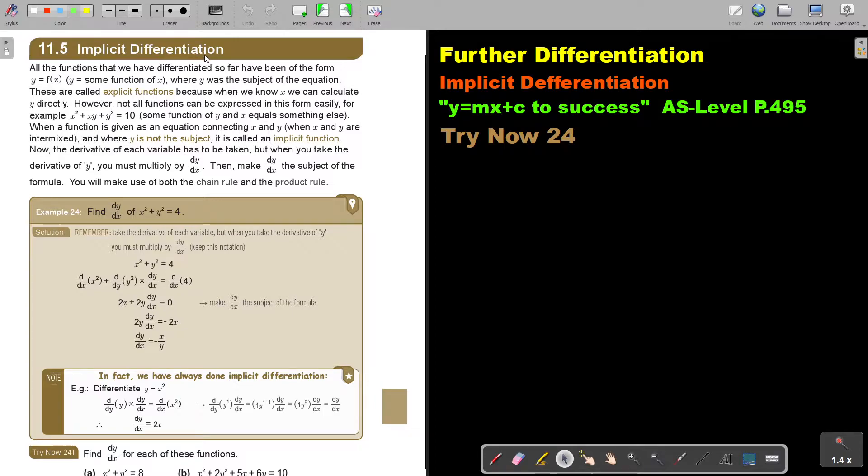Implicit differentiation. All the functions that we have differentiated so far have been of the form y equals f(x) or y equals some function of x where y was the subject of the equation. These are called explicit functions because when we know x we can calculate y directly. However not all functions can be expressed in this form easily. For example, x squared plus xy plus y squared equals 10.